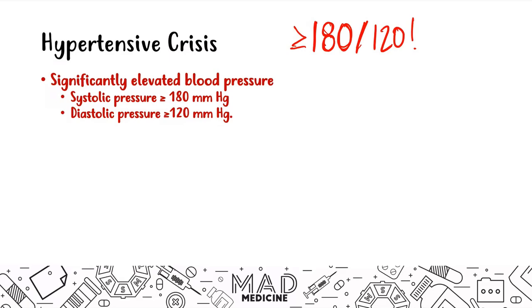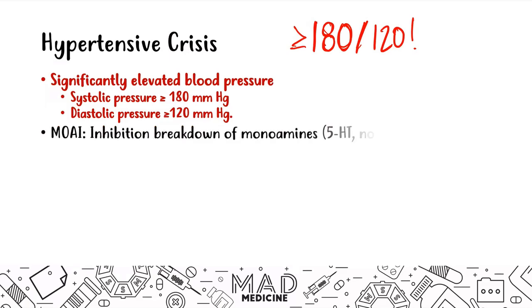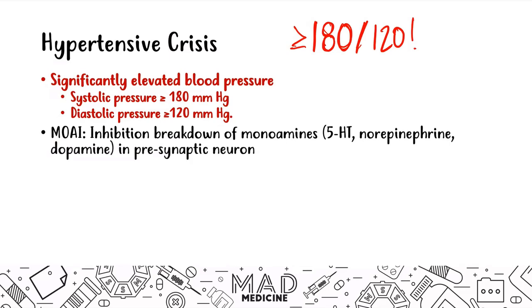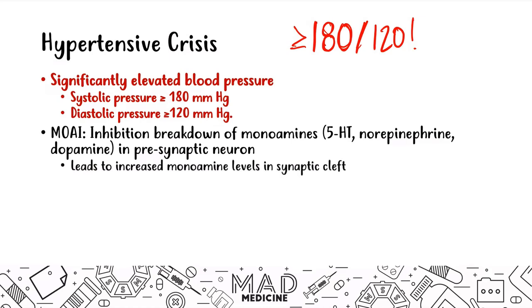Hypertensive crisis usually occurs in patients taking monoamine oxidase inhibitors along with something else. Monoamine oxidase inhibitors inhibit the breakdown of monoamines — serotonin, norepinephrine, and dopamine — in the presynaptic neuron. This leads to increased levels of these monoamines in the synaptic cleft.